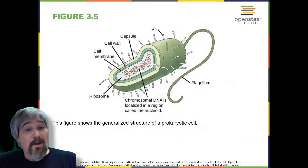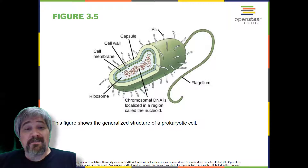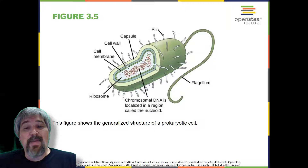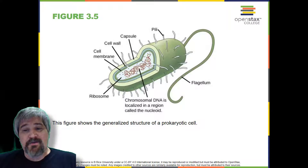However, prokaryotes differ from eukaryotic cells in several ways. A prokaryotic cell is a simple, single-celled or unicellular organism that lacks a nucleus or any other membrane-bound organelle. We will shortly come to see that this is significantly different in eukaryotes.